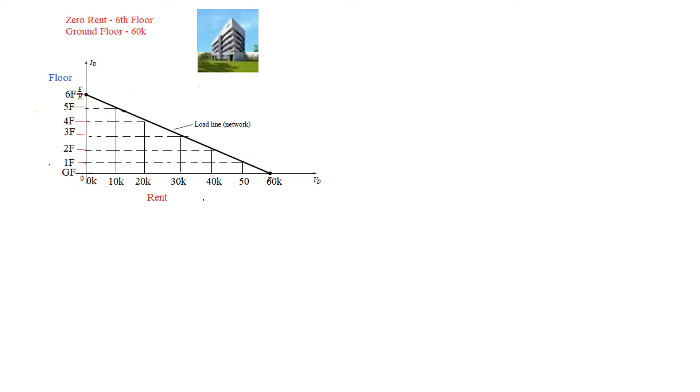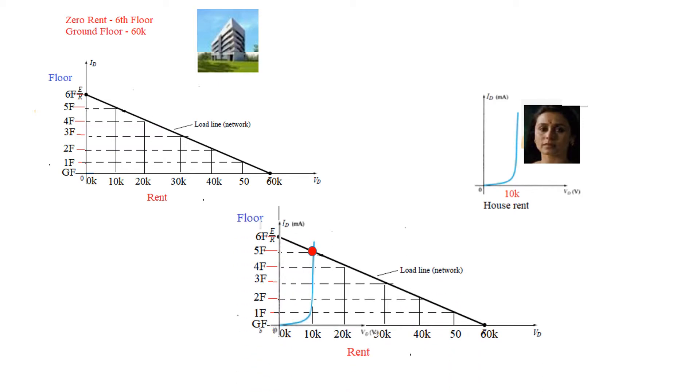And now the other part of the story is that his wife does a job and she earns 10,000 rupees as house rent. So now we plug in this graph on this to find out which floor they are going to afford. Once we have plugged in this, you can see this is the point of intersection. So that means they can afford 5th floor with the rent of 10k.